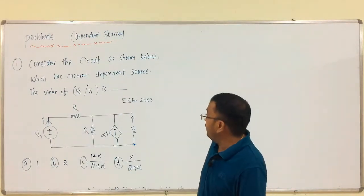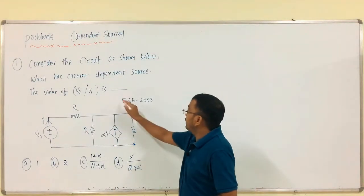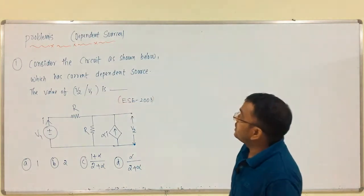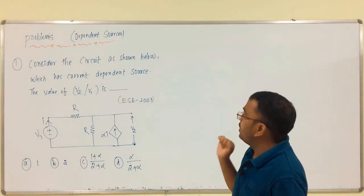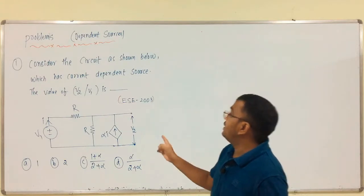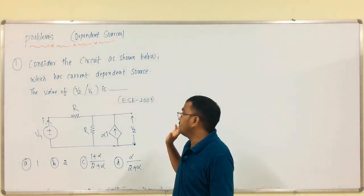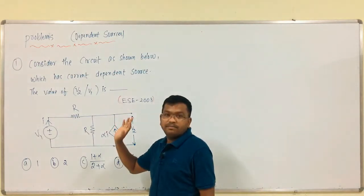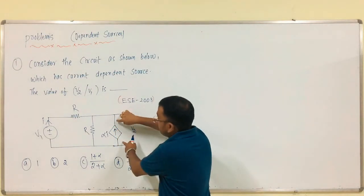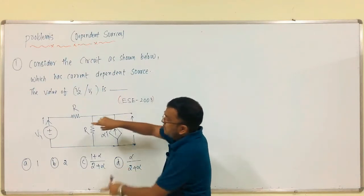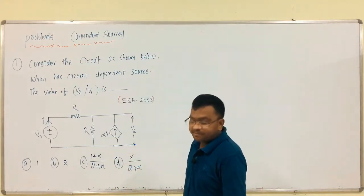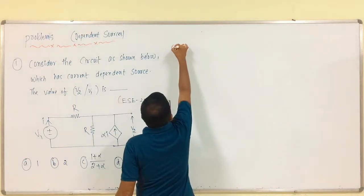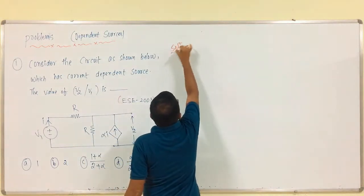This is the problem asked in ESC 2003. Consider the circuit shown below which has a current dependent source. We have to calculate the value of V2 by V1 — the ratio of the voltage across this current dependent source to the supply voltage V1.